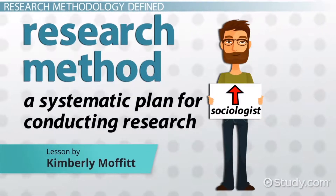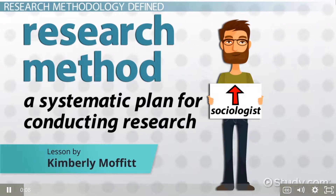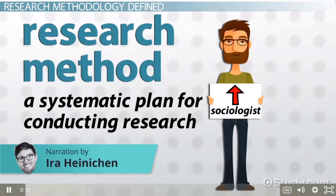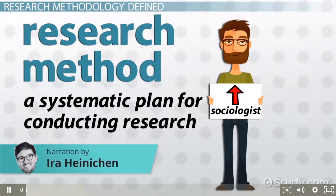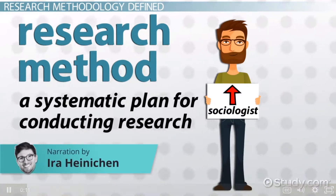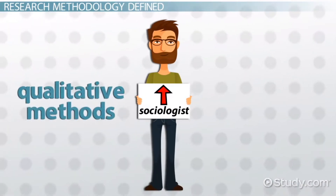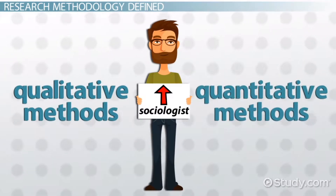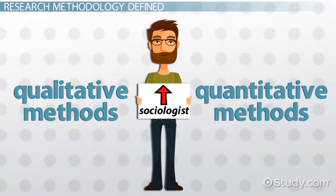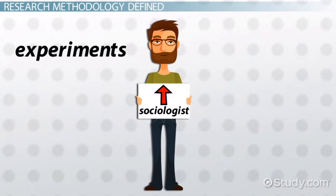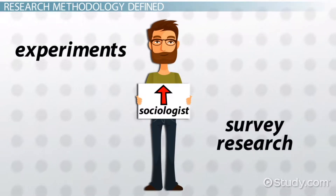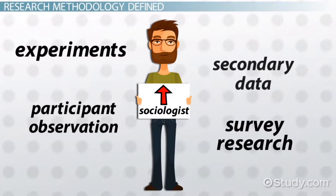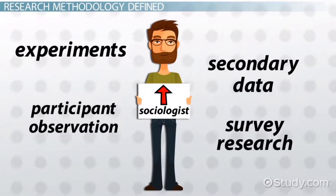A research method is a systematic plan for conducting research. Sociologists draw on a variety of both qualitative and quantitative research methods, including experiments, survey research, participant observation, and secondary data.